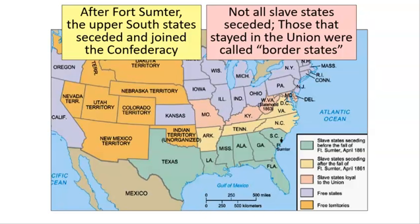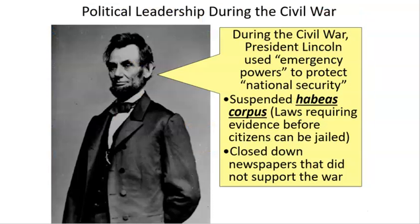Lincoln does a few things immediately. He calls for 300,000 more volunteers for three months — a lot of people thought this was going to be a short war. He also suspends something called habeas corpus, which is the law that prevents the government from arresting you and throwing you in jail without evidence or a trial. He especially suspends this in Maryland, around Baltimore, where newspapers were unsupportive of the war and trying to convince people to let the South go. He arrests some editors and speakers and closes down some of these newspapers — a violation of First Amendment freedom of speech and freedom of the press.